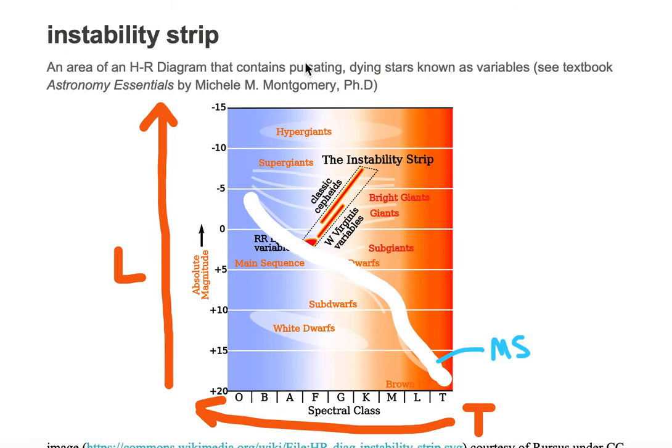We want to find this instability strip. This instability strip is shown in purple - it's a rectangle going from lower left to upper right, above the main sequence. It doesn't go all the way to the upper right; it's just a rectangular strip.